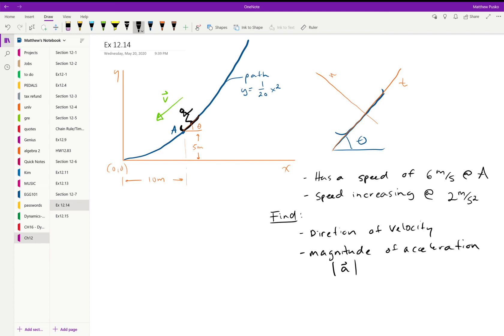Let's take a look at example 12.14. We have a skier who reaches point A on a parabolic path. The path is given as x squared over 20. At that point, he's going 6 meters per second.